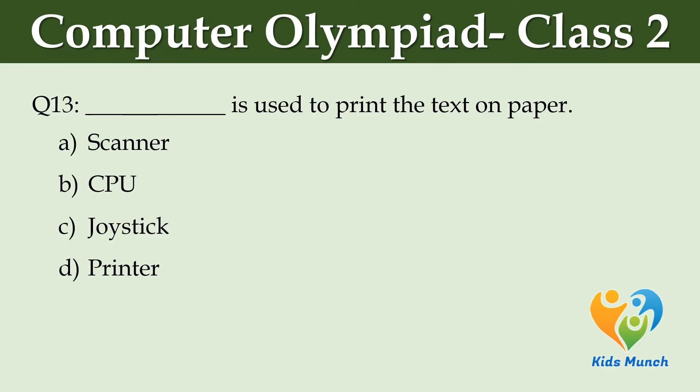Dash is used to print the text on paper. Option A: Scanner. Option B: CPU. Option C: Joystick. Option D: Printer.